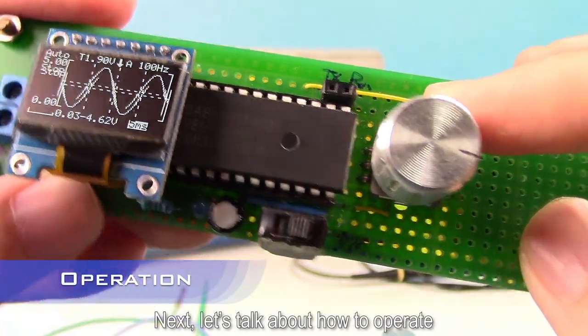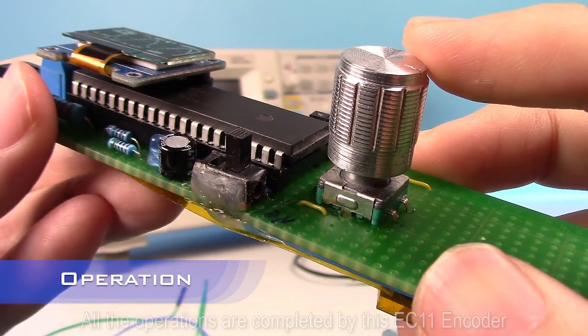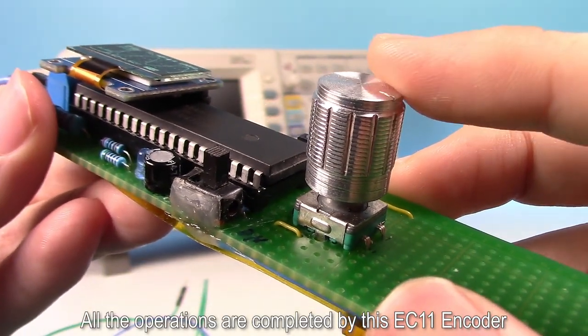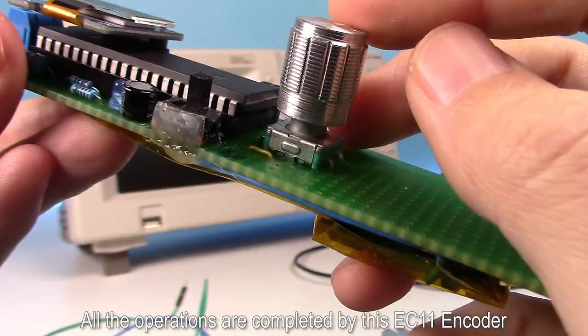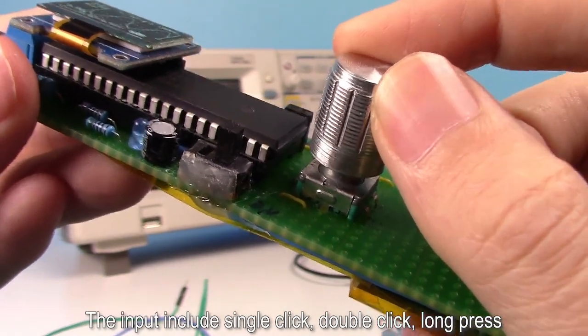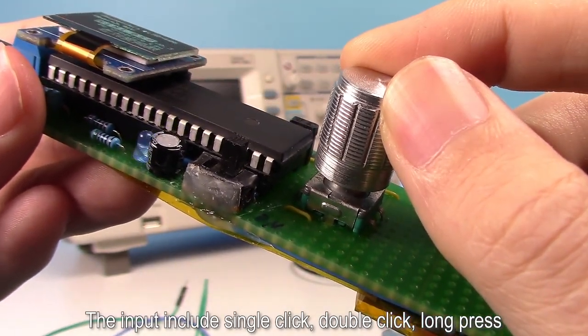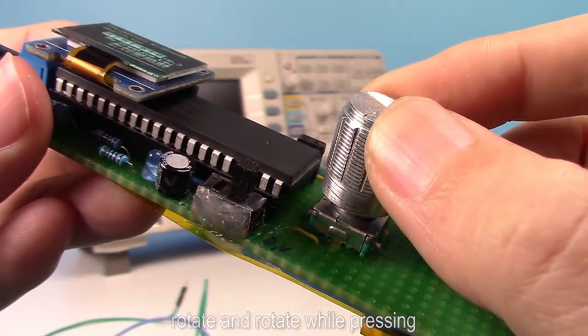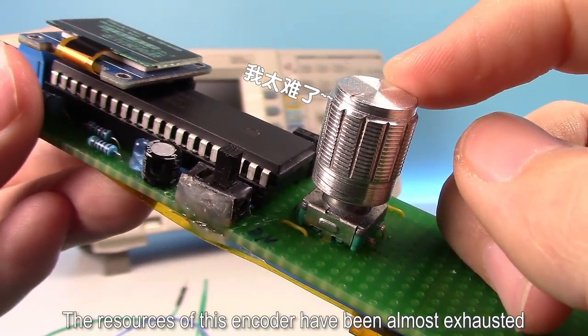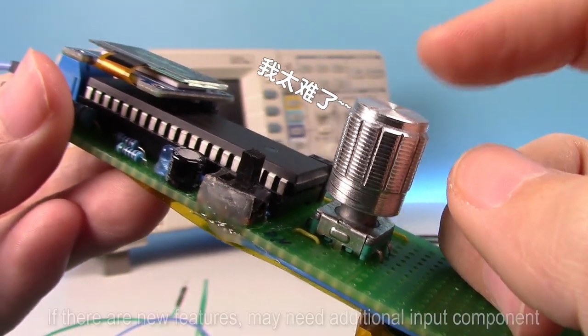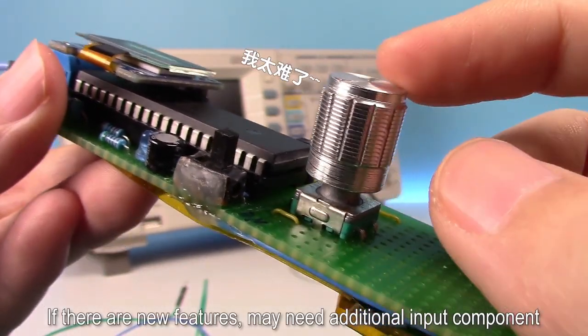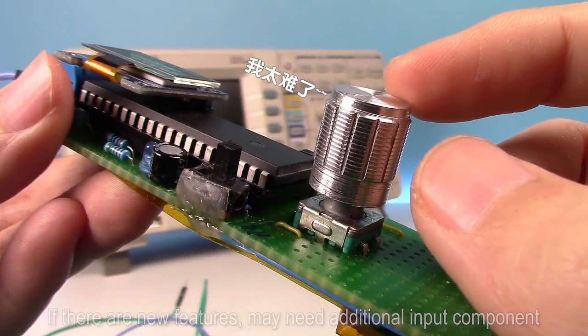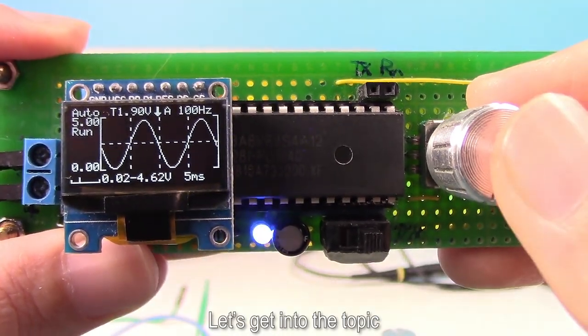Next, let's talk about how to operate. All the operations are completed by this EC11 encoder. The input includes single click, double click, long press, rotate, and rotate while pressing. The resources of this encoder have been almost exhausted. If there are new features, may need additional input component. Let's get into the topic.